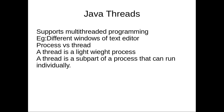A process is a program in execution. That means a process has allocated memory for its code area, data area, and stack area — all those parts of the program memory have to be allocated.